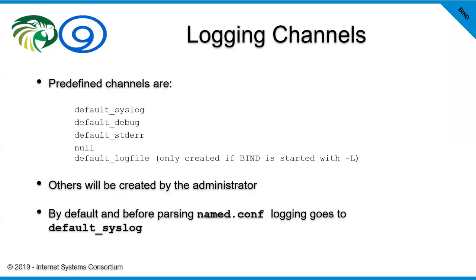Channels are where each of those categories is sent. You as the administrator can say: I have this category and I want to send it somewhere I can find it, like a log file. You can combine it with another category — you can send one or more categories into a single channel, and you can also take a single category and send it to multiple channels. So you're able to both combine and split categories among different channels.